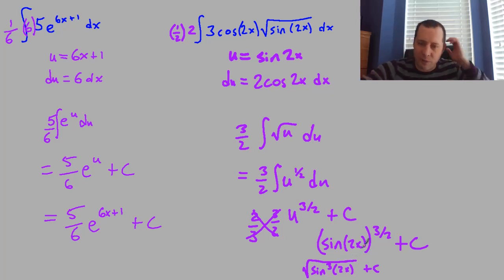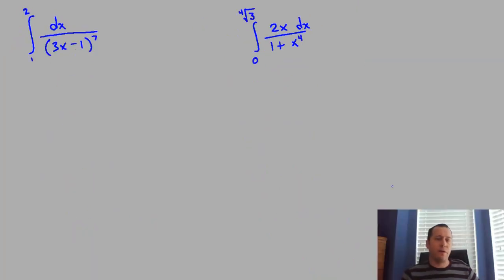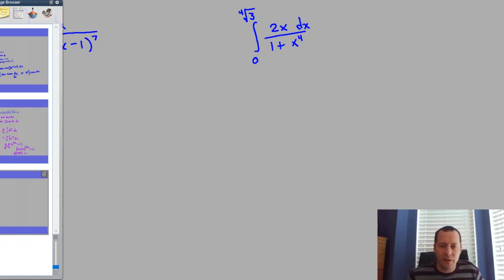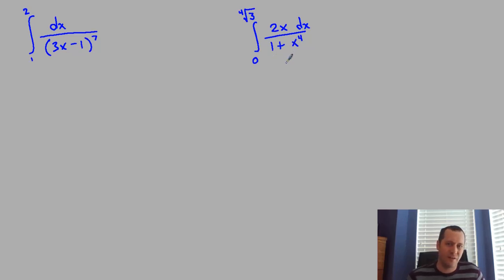The next example has a definite integral, and we'll look at how to handle the limits of integration—there are a couple of ways to do it. The second problem I've put up is a little tricky. As a hint: think about what antiderivative form this looks like and how to make it match.